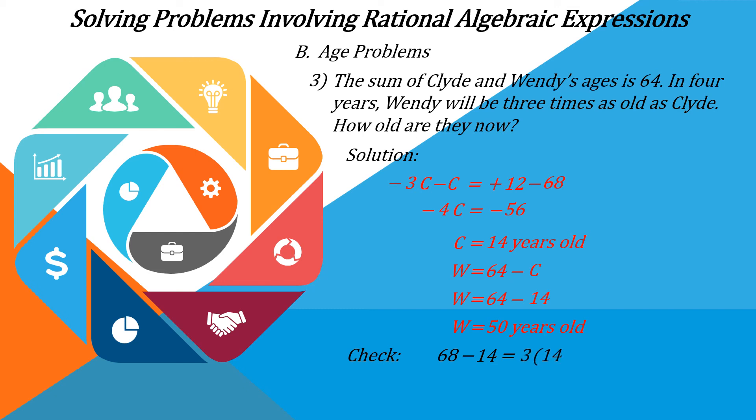...is equal to 3 multiplied by 14 plus 12. And 54 is equal to 54. Therefore, our answer for the age of Clyde and Wendy is correct.